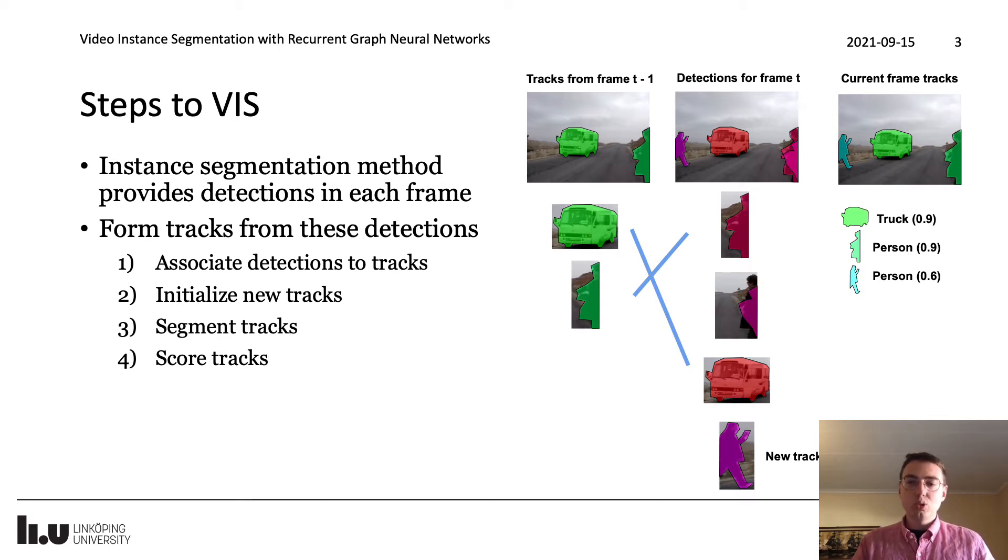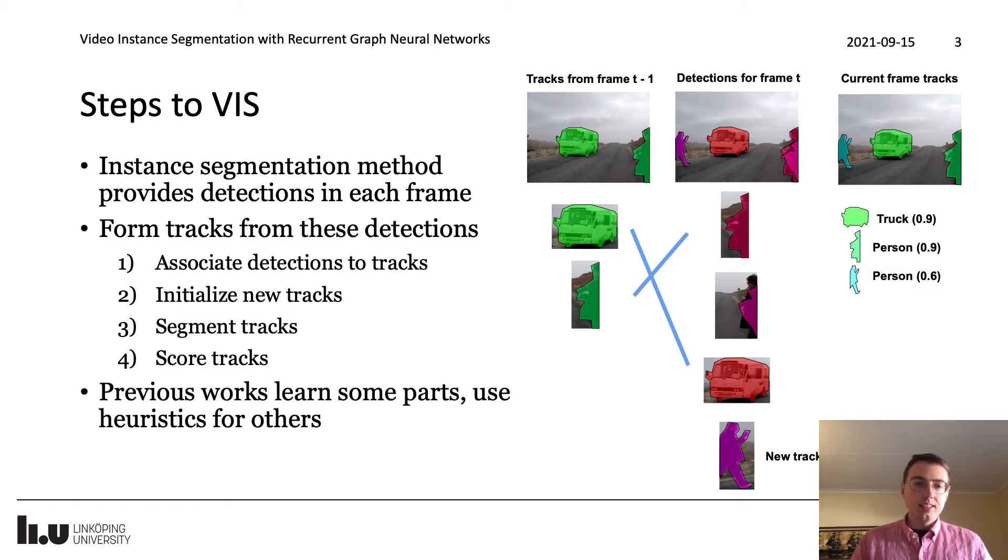To tackle the video instance segmentation problem we need to do four things. First we need to match our previous tracks to detections in the current frame. Then we need to initialize new tracks. Next we need to segment the tracks that we have settled on, and last we need to score the tracks providing a class membership prediction and a confidence for each track. These four steps permit us to do video instance segmentation. Prior works learn different parts of the problem but also rely on heuristics. They learn appearance extractors and train the appearance to be similar for different views of the same object and different for different objects. This learned mechanism is combined with heuristics to tackle the complete problem. In this work we ask whether we can instead learn to tackle the entire video instance segmentation problem.